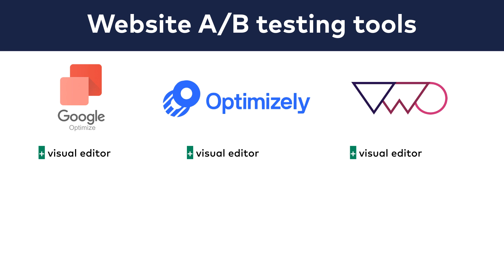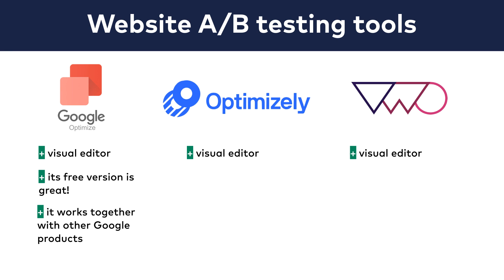Personally, I use Google Optimize because its free version has all the features that I need from an A/B testing tool. Also, it works together with Google Analytics and with other Google products very well. For instance, you can use the goals you set in your Google Analytics project for your Google Optimize experiment too, or you can target your A/B test audience based on your Google Ads parameters.